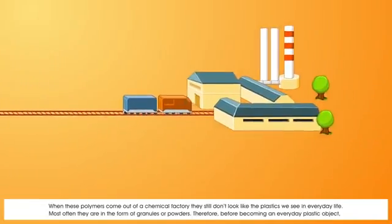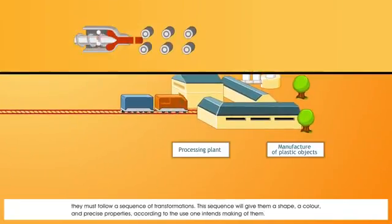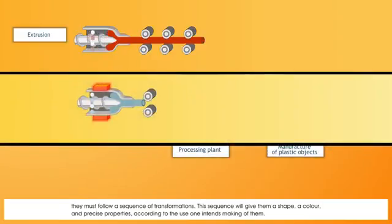Therefore, before becoming an everyday plastic object, they must follow a sequence of transformations. This sequence will give them a shape, a colour, and precise properties according to the use one intends making of them.